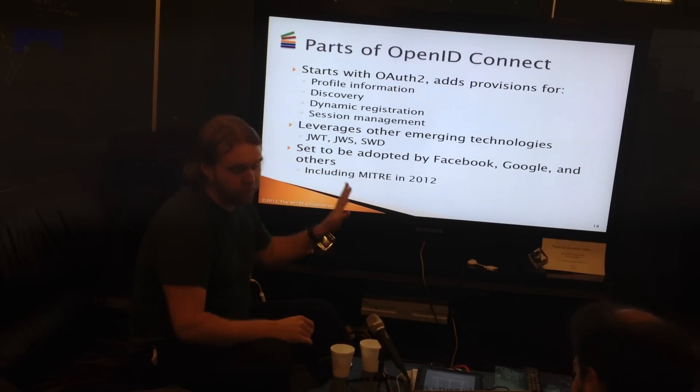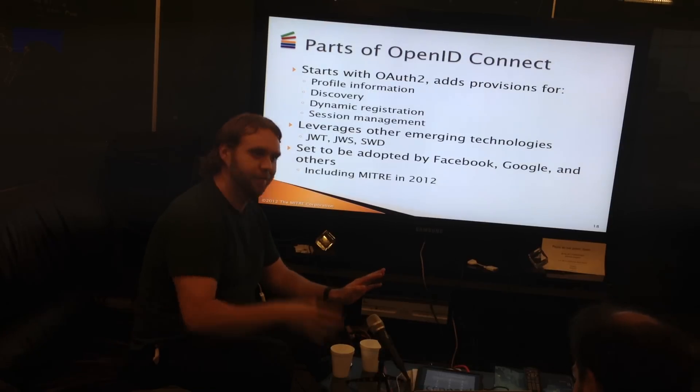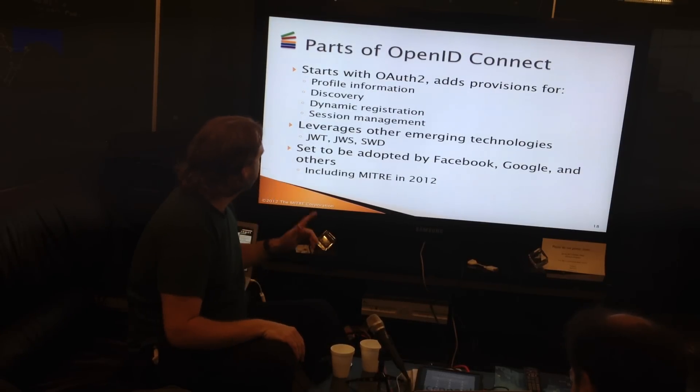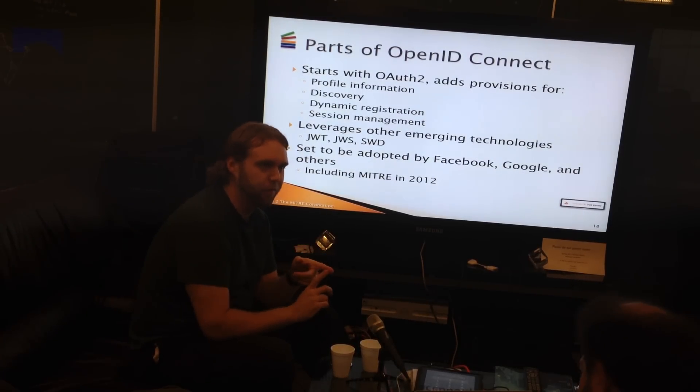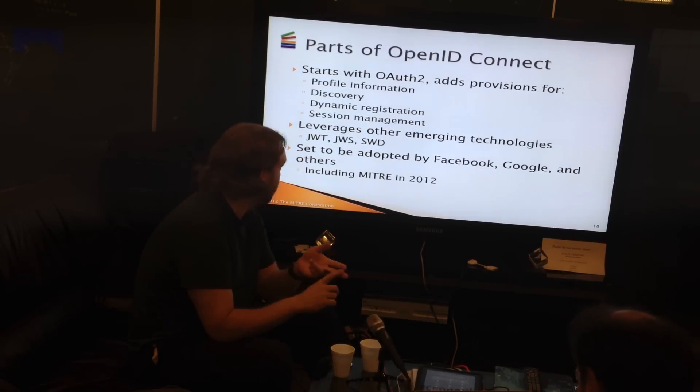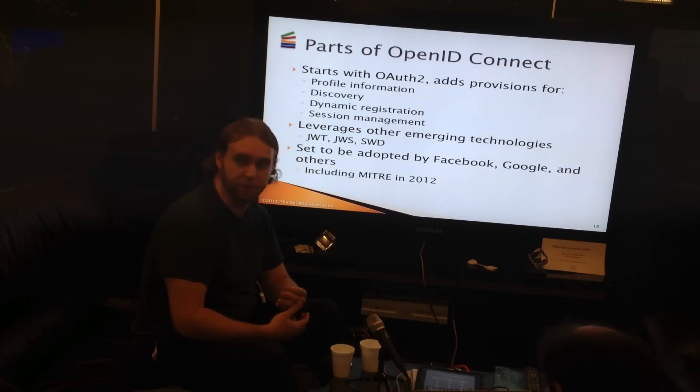So you start with just basic OAuth 2, and you add some other stuff that makes it work in a more dynamic world. Dynamic registration, session management, server discovery — all of these pieces are not inside of OAuth. OAuth very specifically said that's out of scope. But more importantly, there's a bit of profile information. This is the structure of what somebody's profile looks like.